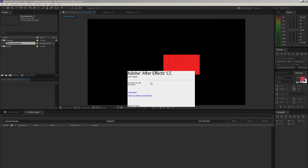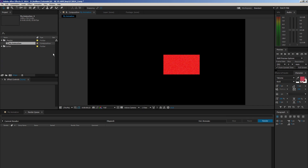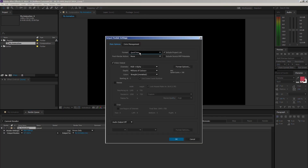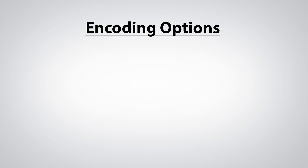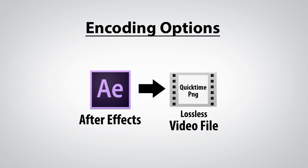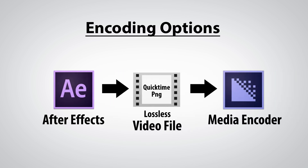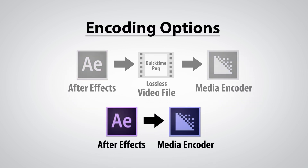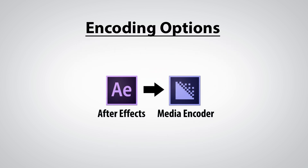After Effects CC 2014 — from this version on you can't encode a decent compressed file in After Effects. No H.264 here, and I won't find an option to enable it in preferences either. My options are: render a lossless format — QuickTime PNG or ProRes 444 if I'm on Mac — and take that rendered file to Adobe Media Encoder or some other encoding software to create a compressed file. Or I can render directly from After Effects to Adobe Media Encoder. Obviously the second option is better if you don't need a lossless format. So let's explore this option and see what to watch out for.